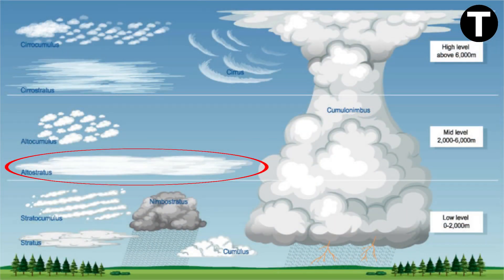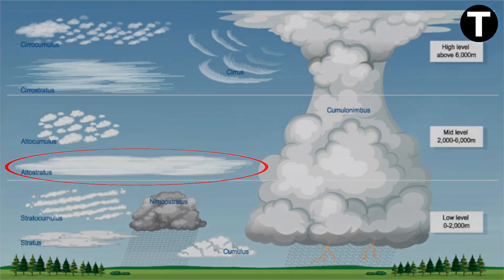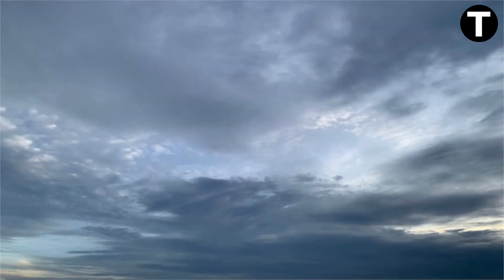Altostratus clouds, appearing in layered gray sheets, diffuse light without casting shadows. They can bring light precipitation and are associated with stable air.